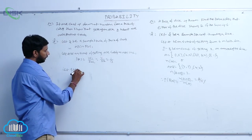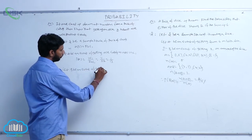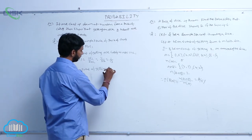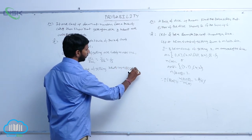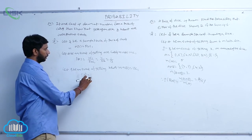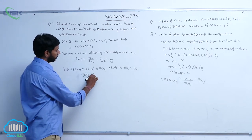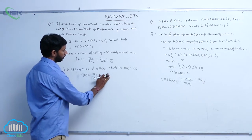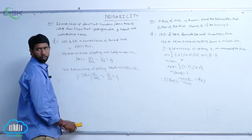And let B be an event of getting hearts. That implies N(B) = 13C1. Then P(B) = 13C1 by 52C1 = 13 by 52 = 1 by 4.